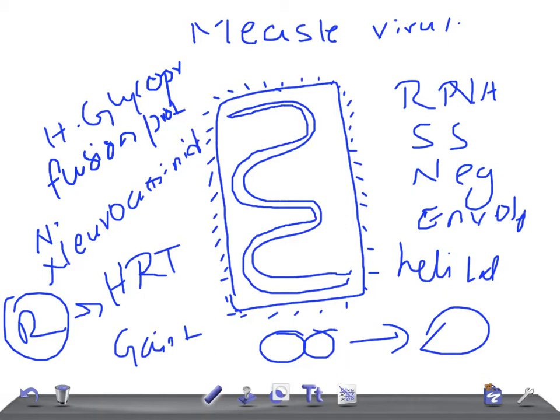Subacute sclerosing panencephalitis is a very important complication. In USMLE Step 1, they give the patient history: he had cough, conjunctivitis, coryza, and photophobia. Later, a few years later, he developed personality changes in the form of seizures, myoclonus attacks, photosensitivity, confusion, ocular manifestations, spasticity, or sudden coma.